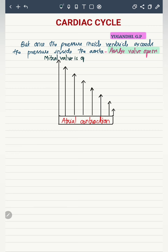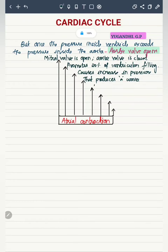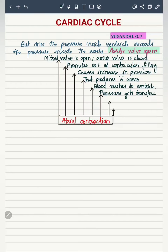To revise: the mitral valve is open because the pressure inside the atrium is greater than that of the ventricle, and the aortic valve is closed because the pressure inside the aorta is greater than that of the ventricle. Atrial contraction promotes just 20% of ventricular filling; the remaining 80% occurs by passive filling. The atrial contraction causes increased pressure inside the atrium, pushing blood into the ventricle and producing a pressure wave called the A-wave.